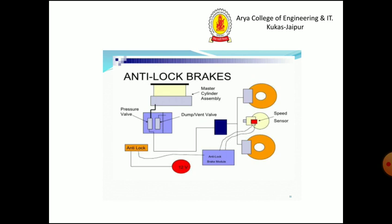This is the schematic diagram of the anti-lock brakes assembly. Next is collision warning systems. It uses surround radar or laser sensors in the vehicle to recognize danger based on the distance to the obstacle ahead and speed. If the distance is large, a warning sound is given; then an initial brake system is applied; and if the obstacle is very close, auxiliary brakes are applied.